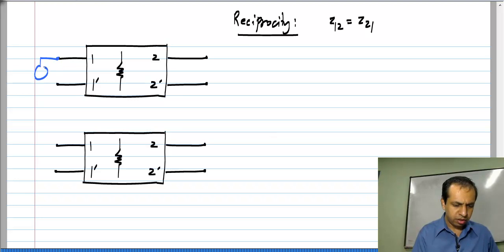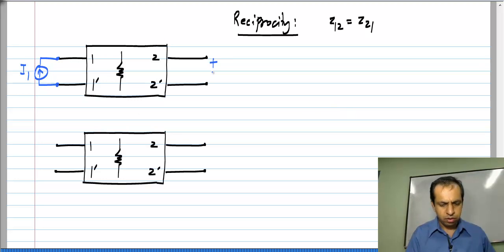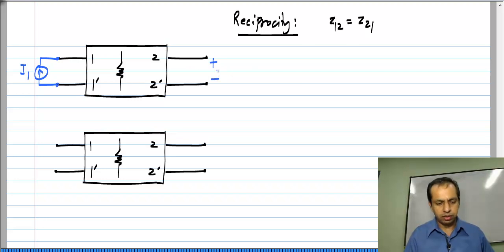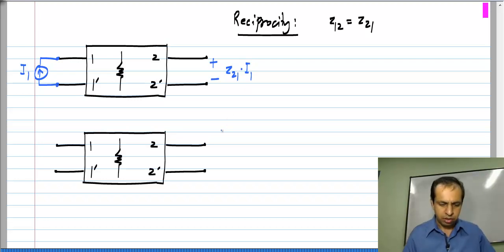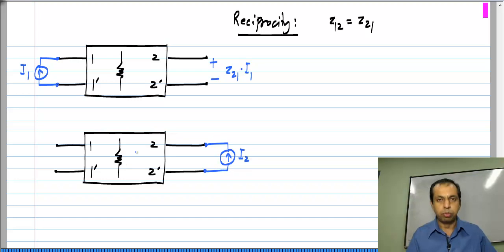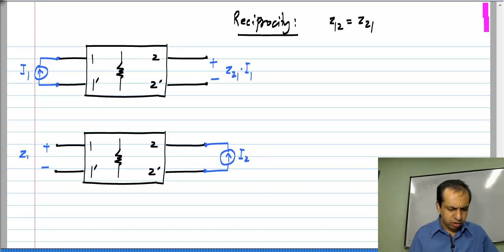Let us say I connect I1 to port 1 and nothing to port 2 — I leave port 2 open-circuited. Clearly, what comes out at port 2 between these two points is Z21 times I1. This is from the definition of Z parameters. Similarly, let us say I connect I2 to port 2 and leave port 1 open-circuited. The voltage that I get here would be Z12 times I2.